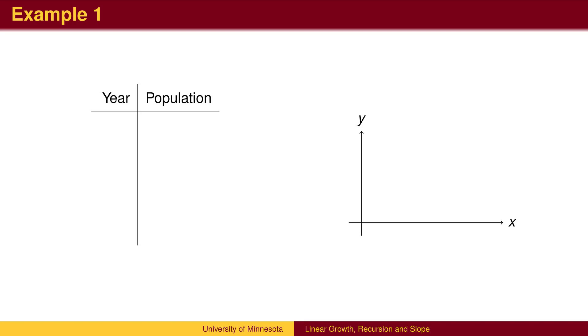We call this Linear Growth. The graph of the population as a function of time is a line. We will talk more about equations of lines at the end of this video.